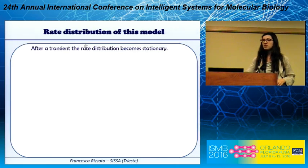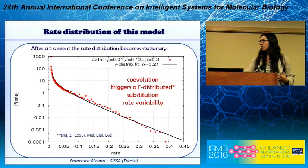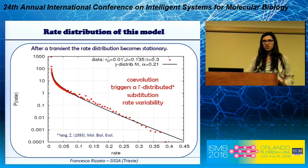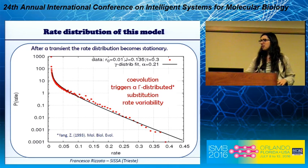The second quantity is the rate distribution. This model doesn't predict homogeneous rates, but after a certain time the rate distribution becomes stationary and we can analyze it. We found that the rate distribution produced by this model is gamma-distributed, which is interesting because this is the shape generally chosen when building phylogenetic trees and known to fit data well. We have thus shown that co-evolution — the only realistic feature in our model — is enough to trigger gamma-distributed substitution rates, suggesting co-evolution is important in the process of rate variation.